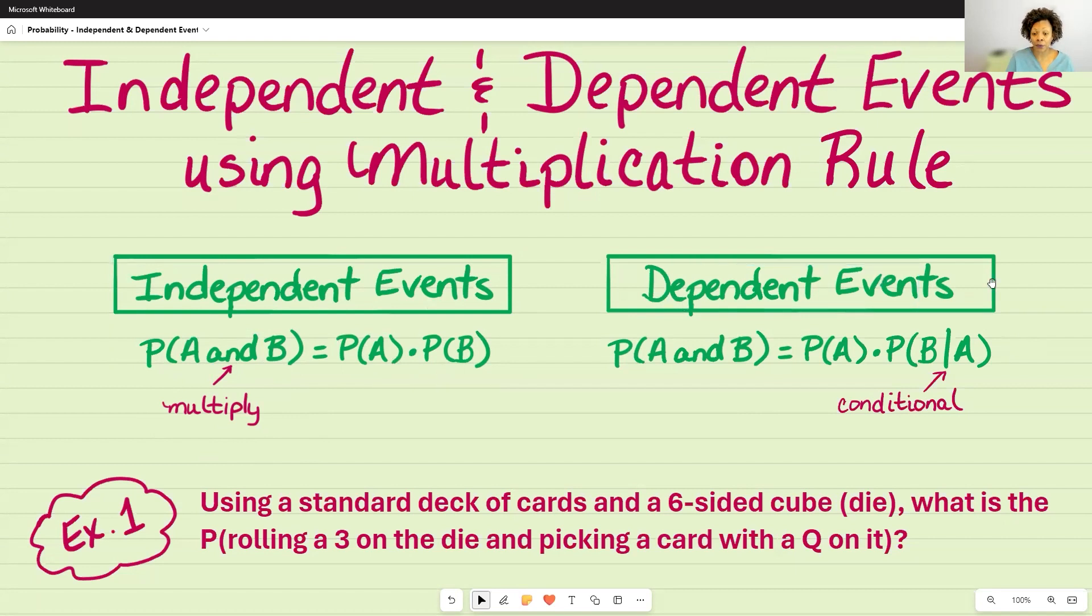If I have the dependent event formula, it's similar with one difference. The probability of A and B is equal to the probability of A times the probability of B, given that A has already occurred. So you've seen this in another video, the conditional probability video.